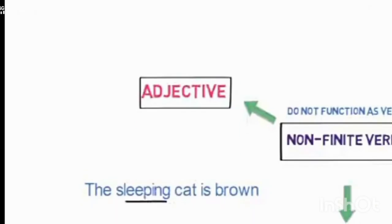How it works as an adjective: in the sentence 'The sleeping cat is brown,' the word sleeping sounds like a verb, but in this sentence it is acting as an adjective. It is giving us more information about the noun 'cat.' So the word sleeping is actually working here as an adjective.